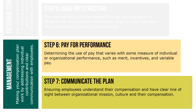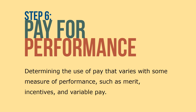Our third and final functional area is compensation management — how we make our compensation plan work by addressing individual contributions and creating clear communication with employees. How do we recognize individual contribution that makes pay decisions clear to all employees? Compensation management includes the steps of pay for performance, or variable pay, and communicating the compensation plan to employees. Step 6 is pay for performance, which determines the use of pay that varies with some measure of performance, such as merit, incentives, and variable pay.